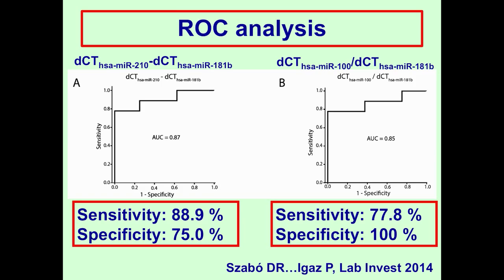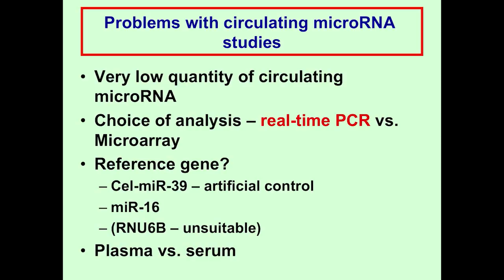The most significant problem is associated with the very low quantity of circulating microRNA, which relates to the choice of analysis — we think microarray is not very good compared to real-time PCR. Next-generation sequencing might be a useful alternative. Regarding the reference gene: cel-miR-39 is an artificial spike-in control that only controls technical procedures, not biological reference. MiR-16 is widely used as a relatively abundant microRNA, but we have shown in some studies that miR-16 levels might also change. RNA-6b was completely unsuitable. Another major question is whether to use plasma or serum, as the circulating microRNA profile is not the same in both — coagulation and platelet activation will greatly modify the microRNA expression profile.